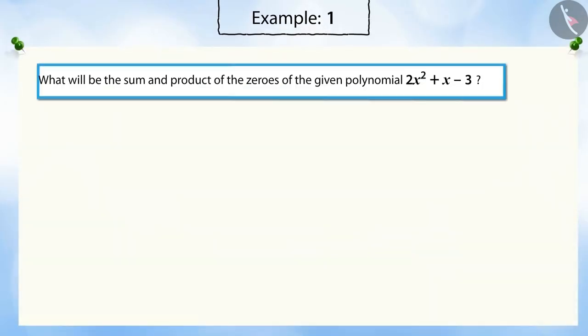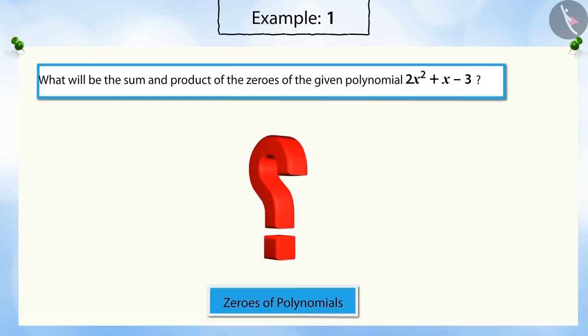What will be the sum and product of zeros of the given polynomial 2x² + x - 3? Can you say how many zeros this polynomial has?